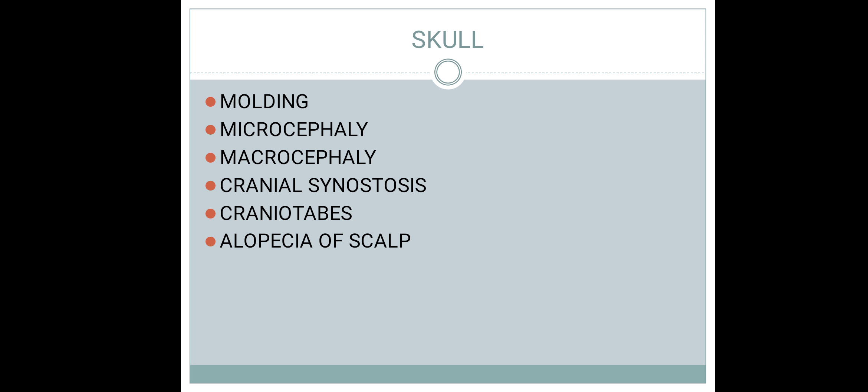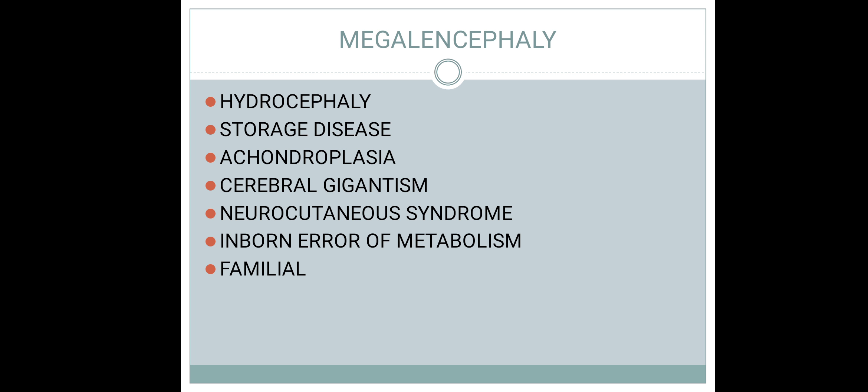Aplasia cutis congenita — otherwise called alopecia of the scalp — is an autosomal dominant condition producing absence of scalp hair in a particular area. You should examine the scalp carefully, look for cephalohematoma and caput succedaneum, and feel all the fontanels to check whether they are normal, large, open, or closed.